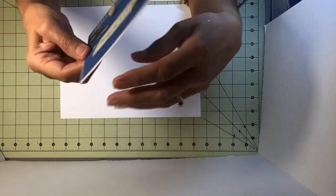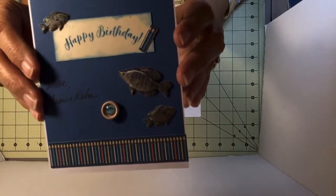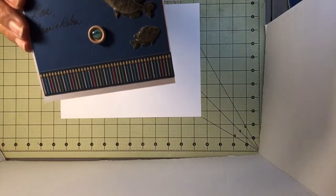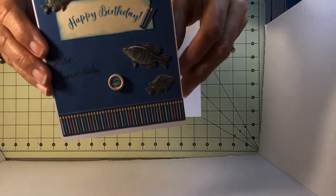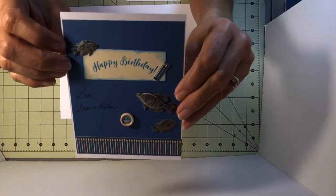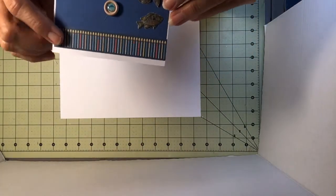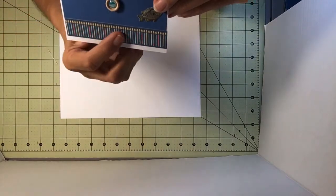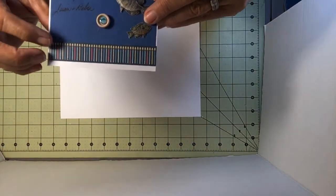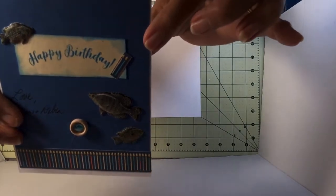Then it says happy birthday. Happy birthday. I put some fish, some puffy fish that I got at Hobby Lobby. And I stamped happy birthday. Used a sticker right here, and I had, I cut it, and I had that left over. So I just added it, put it right there.